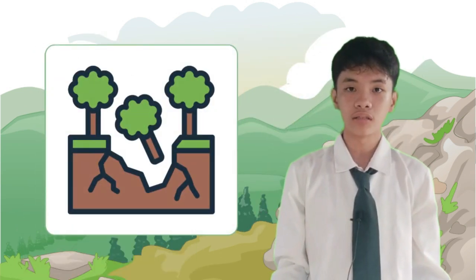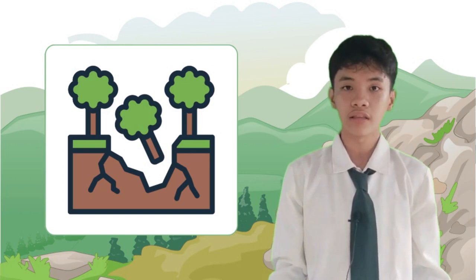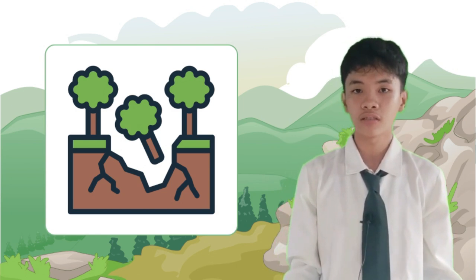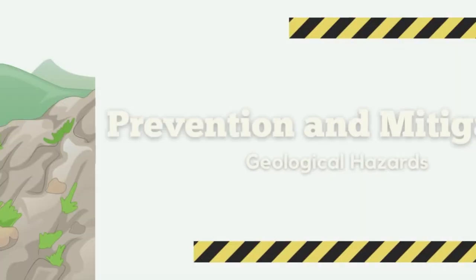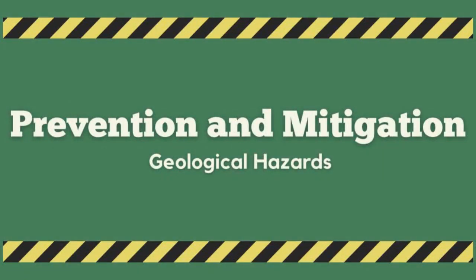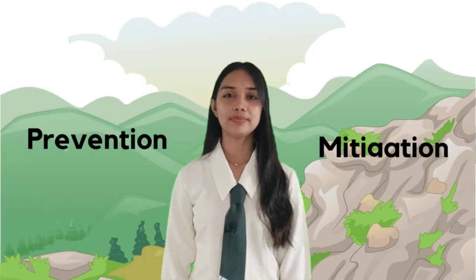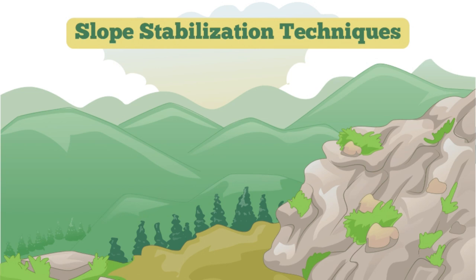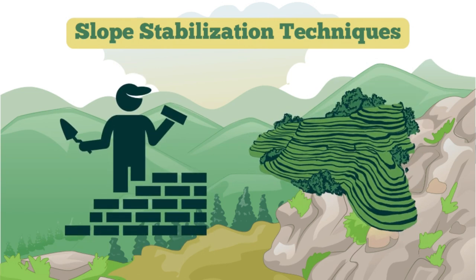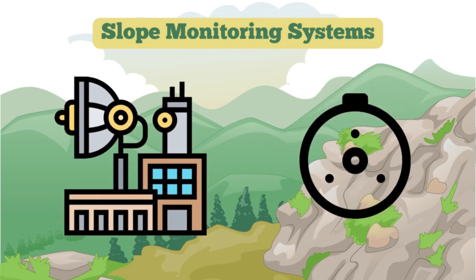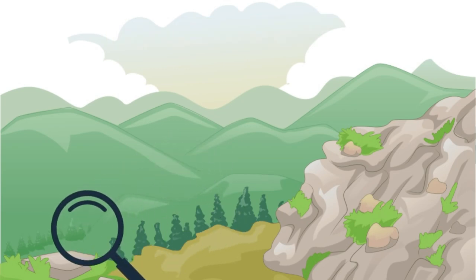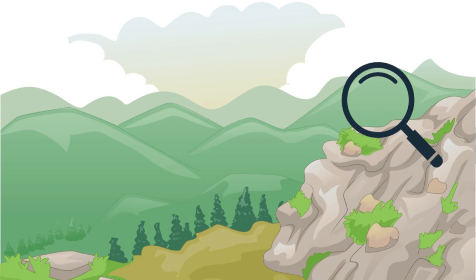Understanding the causes and types of sinkholes is crucial for identifying potential risks and taking appropriate preventive measures. By recognizing the warning signs and implementing proper land management strategies, we can reduce the occurrence and impact of sinkholes. Prevention and mitigation measures include slope stabilization techniques such as retaining walls or terracing to prevent landslides. Monitoring systems such as ground-based radar or inclinometers can also help detect slope movement. In the case of sinkholes, understanding the underlying geology and conducting thorough investigations before construction can minimize risk.